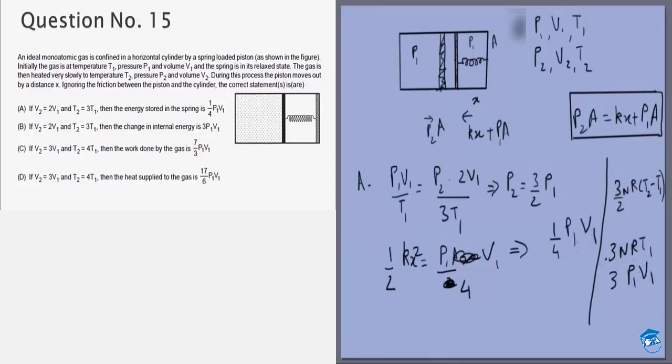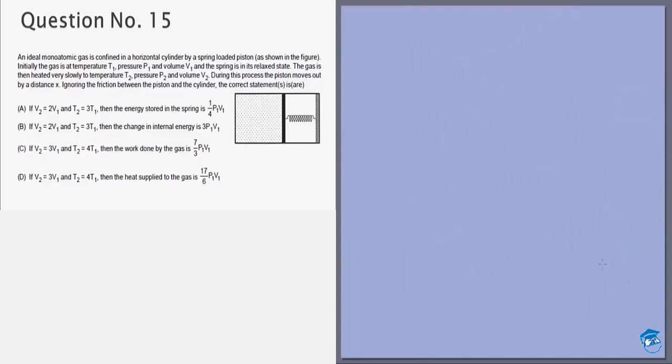Now option C and D are for the same situation. So let's calculate those. We need to find the work done if V2 is equal to 3V1 and T2 is equal to 4T1. That means P1V1 by T1 is equal to P2 3V1 by 4T1, which gives me P2 is equal to 4 by 3 P1.